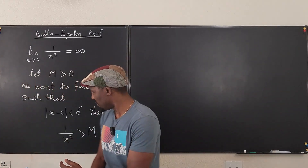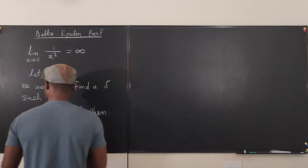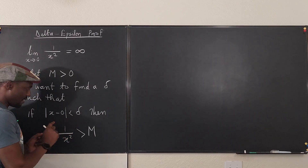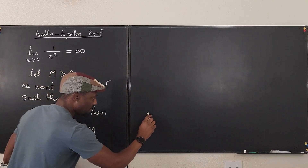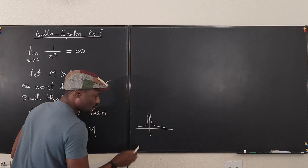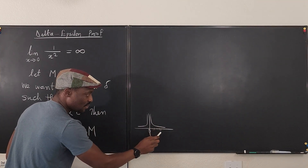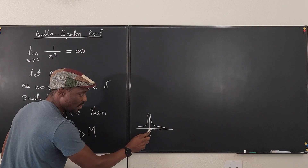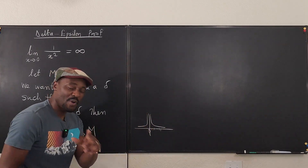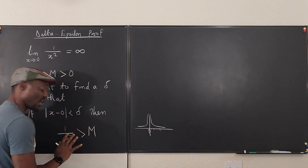That's the sentence: if delta is small enough — that is, the distance of x from zero — and if the values of x you're using are close enough to zero, then the limit you're going to get for this function will be greater than any known number you can imagine. That's the concept here.